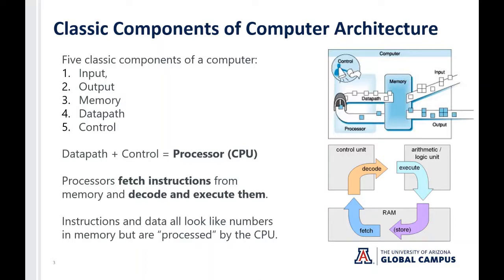You've probably heard of a CPU or a processor, which is the heart and brains of any computer. Processors fetch what are called instructions from memory, and it's the processor's job to decode those instructions, which are in the form of numbers — and when you get down to it, binary numbers, ones and zeros. Decoding them means understanding what those ones and zeros mean and what they're telling the CPU to do. Then the CPU has to execute those instructions.